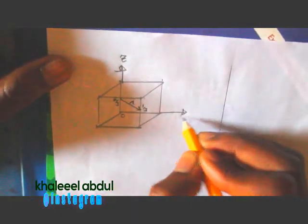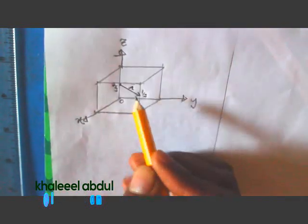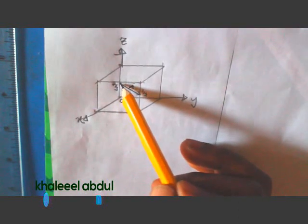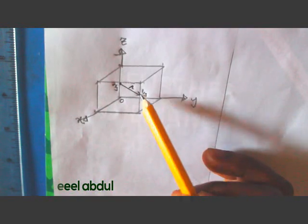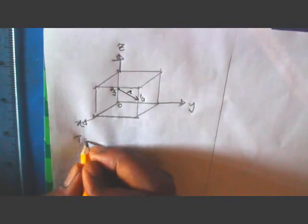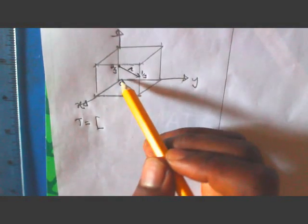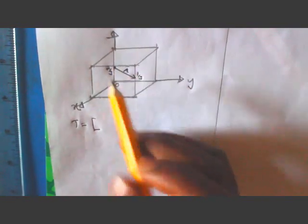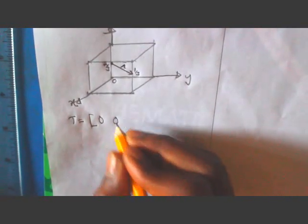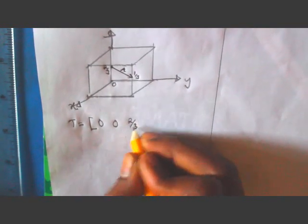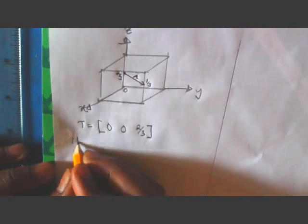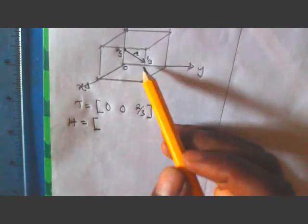Here is Z, here is Y, and here is X — all are positive. To find the direction, here is tail and here is head. For the tail, the x is zero, y is zero, and z is two over three. Therefore x is 0, y is 0, and z is 2 over 3.